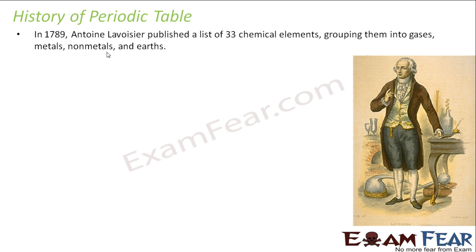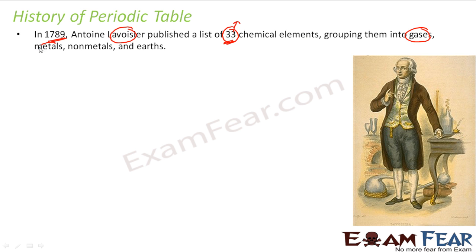The first thing that happened was in 1789. That time there were 33 elements. So by 1789, there were only 33 chemical elements. This guy, Lavoisier, published a list of these 33 elements and grouped them into gases, metals, non-metals, and earth. This was the first effort to classify elements — nobody had bothered to group them before.